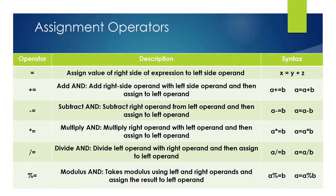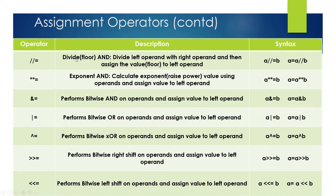Assignment operators are large in number. The basic one is equal to (=), which assigns the value of the right side to the left. Then there's plus-equal-to (+=), minus-equal-to (-=) — for example, a += b means a = a + b. Similarly a *= b means a = a * b. These are shorthand forms — they combine arithmetic operators with assignment. The same applies to modulus.